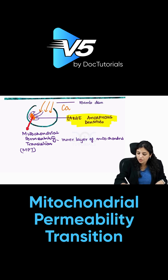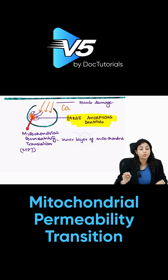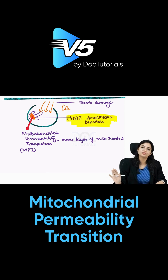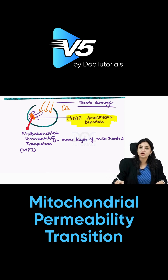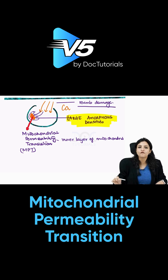Membrane damage and profound mitochondrial dysfunction are the hallmarks of irreversible cell injury, which is going to progress into necrosis. Once you see these two features, the cell cannot be saved — it is going to go into necrosis. This is a very classical and important concept.